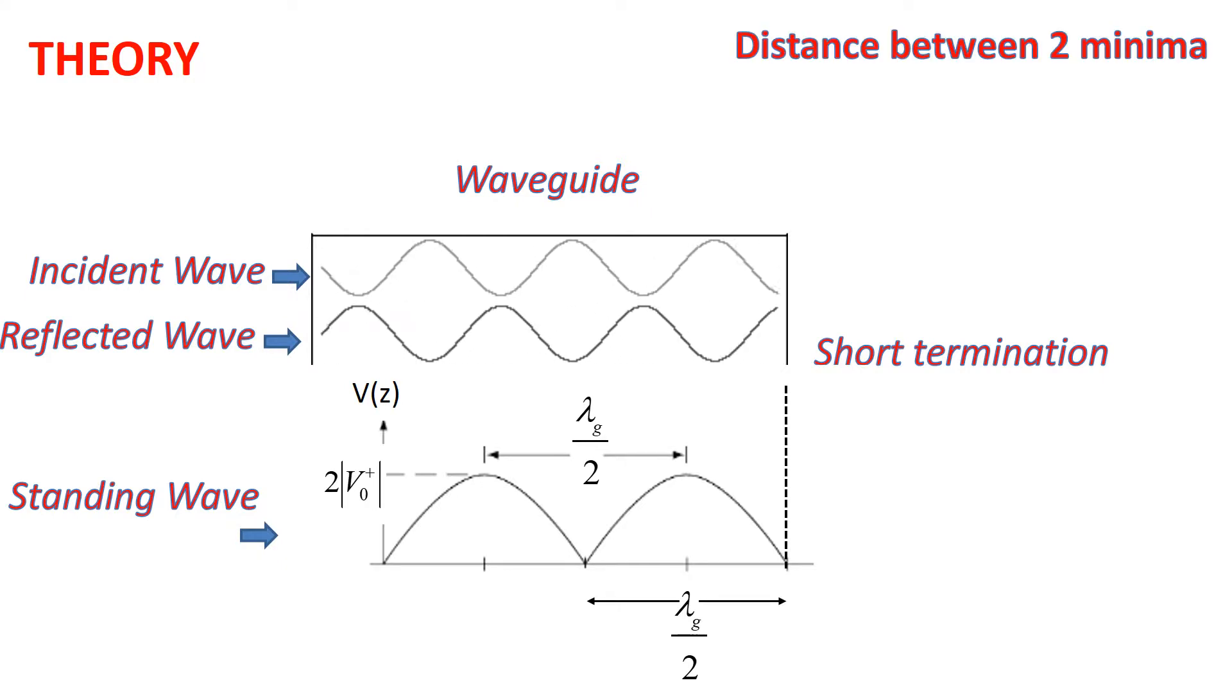Therefore, if we know the distance between two consecutive minima, we may calculate the guide wavelength as twice this distance.